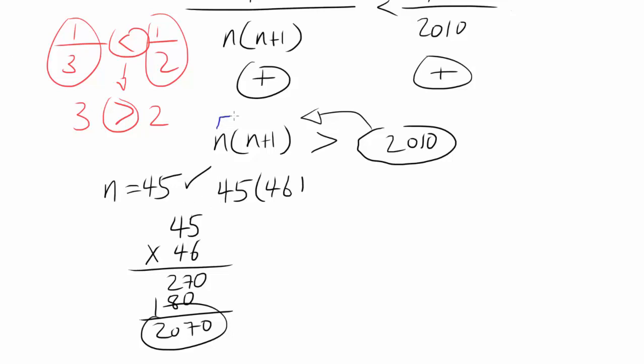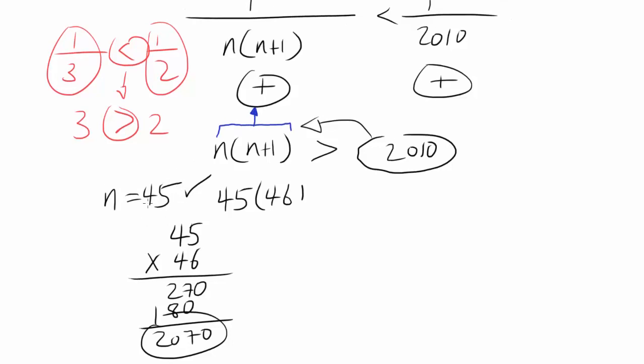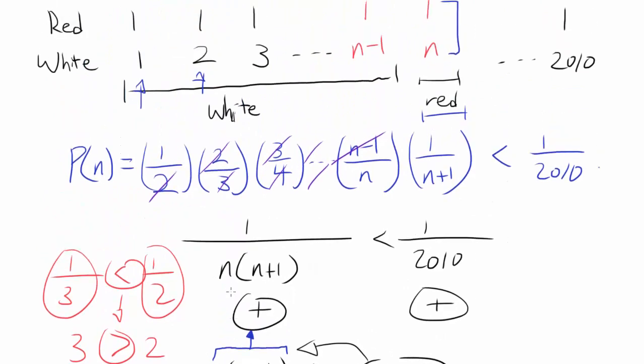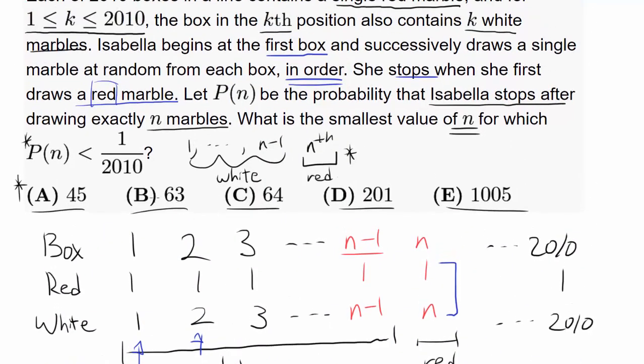So 45 satisfies this equation. As n gets larger, n times n+1 is going to get larger, so our answer is not going to be greater than 45. It's very likely to be 45 because 2070 is barely bigger than 2010 by only 60. And B, C, D, and E are all more than 45, so our answer has to be A.